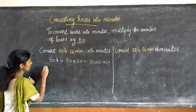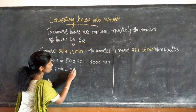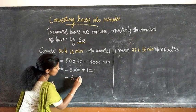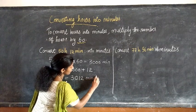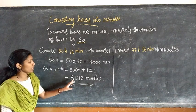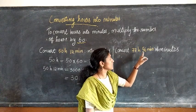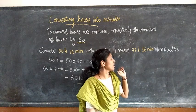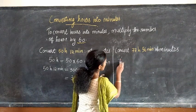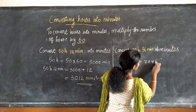Next question: convert 50 hours 12 minutes into minutes. First, we have to convert 50 hours into minutes. 50 hours equal to 50 into 60, that is equal to 3000 minutes. Then we have to convert 50 hours 12 minutes. So 50 hours 12 minutes equal to 3000 plus 12, that is equal to 3012 minutes.